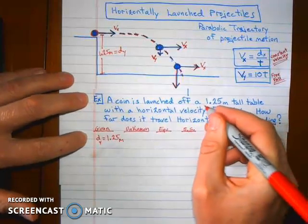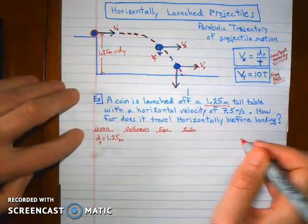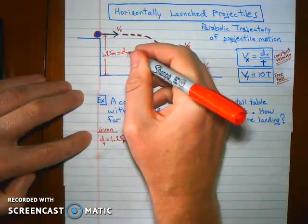So we know that the coin falls. So if we know the height of the tabletop, that's the vertical displacement that the coin is going to fall. That's easy.